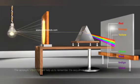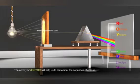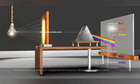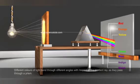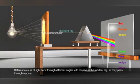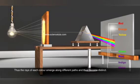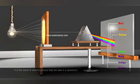Why does this happen? The acronym VIBGYOR will help us remember the sequence of colors. White light is dispersed into its seven color components by a prism. Different colors of light bend through different angles with respect to the incident ray as they pass through a prism. The red light bends the least while violet bends the most. Thus the rays of each color emerge along different paths and become distinct — it is a band of distinct colors that we see in a spectrum.